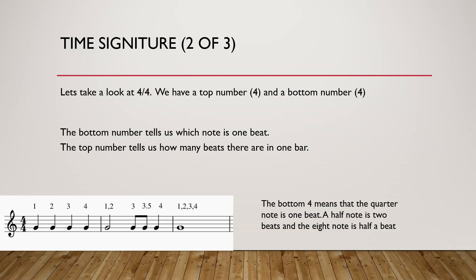We also have 4/4. We have a top number 4 and a bottom number 4. Again, the bottom number always tells us which note is one beat, and the top number tells us how many beats there are in one bar. The bottom 4 means that the quarter note is one beat, so a half note is two beats and the eighth note is half a beat. And there are four beats now in one bar — one, two, three, four.